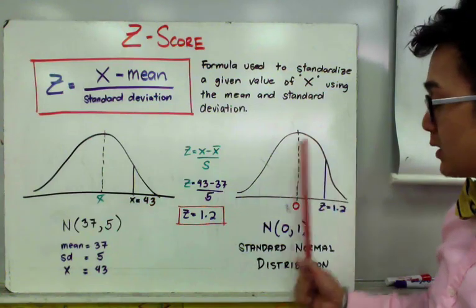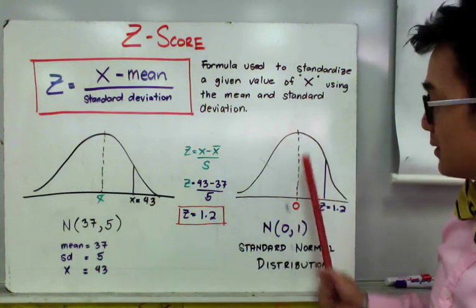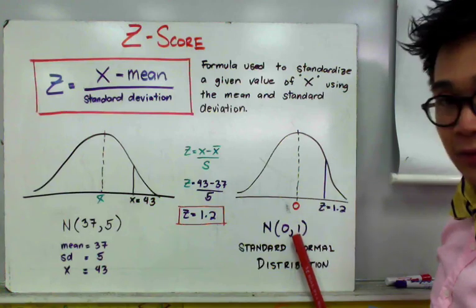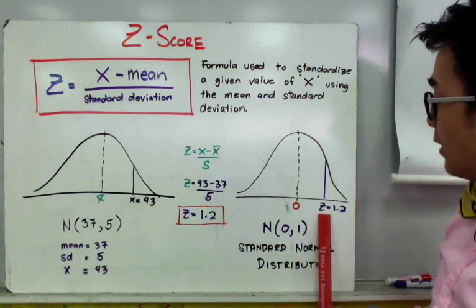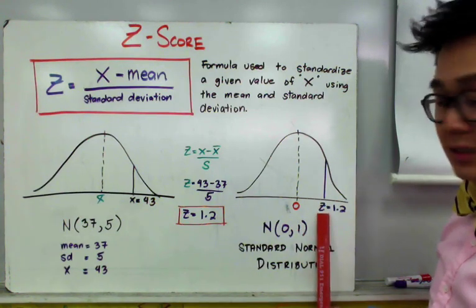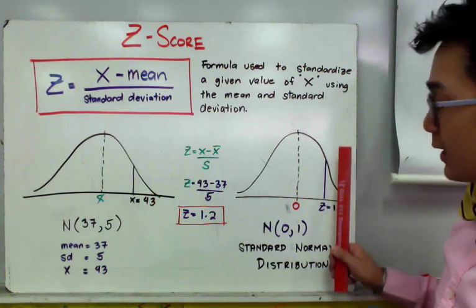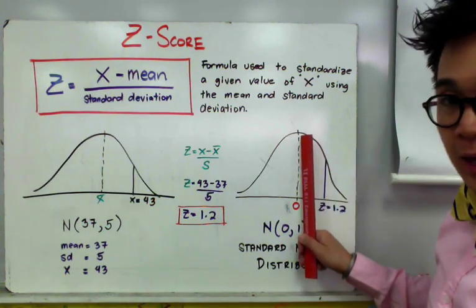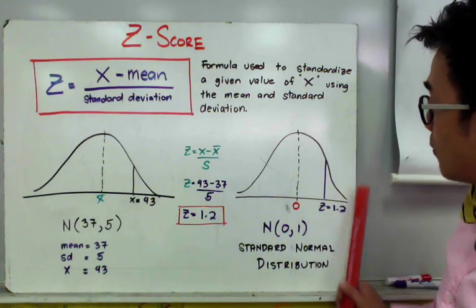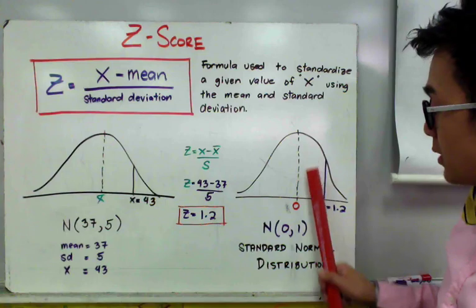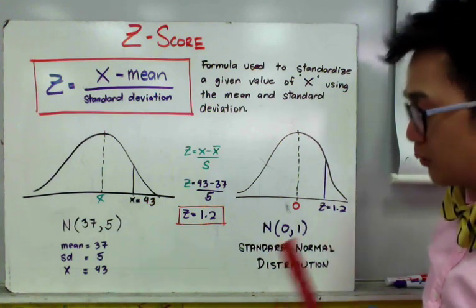This is our standard normal distribution where the center is at 0 and the standard deviation is 1. The location of our standardized value of 1.2 is right here — since it is positive, we estimate its location on the positive side of the standard normal distribution, at z equal to 1.2.